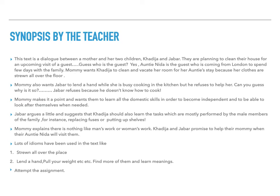This text is a dialogue between a mother and her two children, Khatija and Jabal. They are planning to clean their house for an upcoming guest visit. The guest is Auntie Nida, who is coming from London to spend a few days with the family. Mummy wants Khatija to clean and tidy the room for her auntie's stay because her clothes are 'strewn all over the floor.' 'Strewn all over the place' — what does this mean? It means the clothes are not well-kept but are scattered and spread haphazardly everywhere.